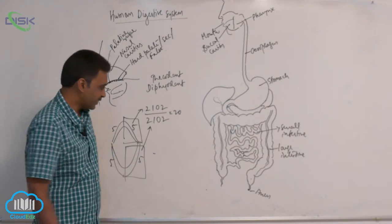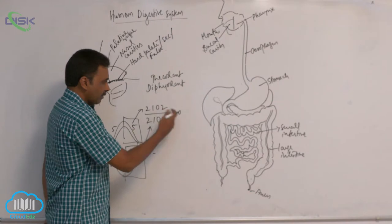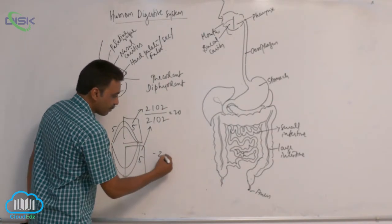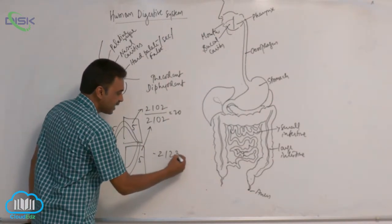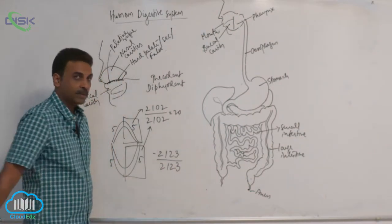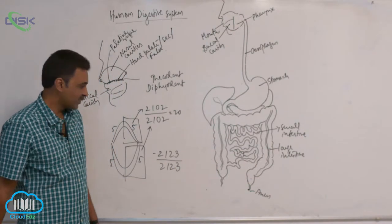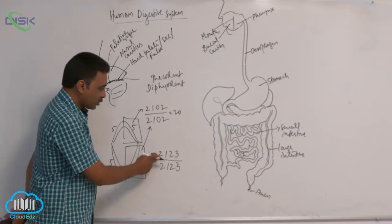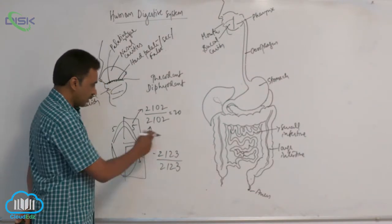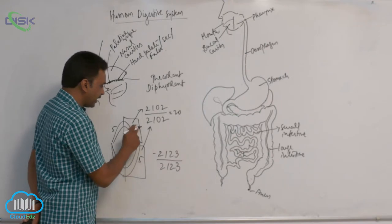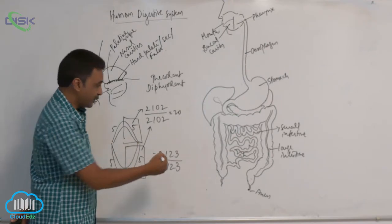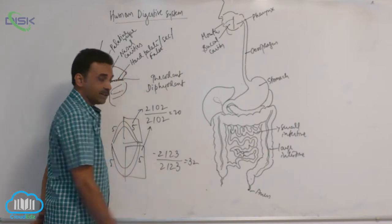The milk teeth are replaced by the permanent set. In the permanent set, you have three, five, and eight teeth per half-jaw — that is eight teeth per quadrant, and four eights gives thirty-two. The total number of permanent teeth is thirty-two.